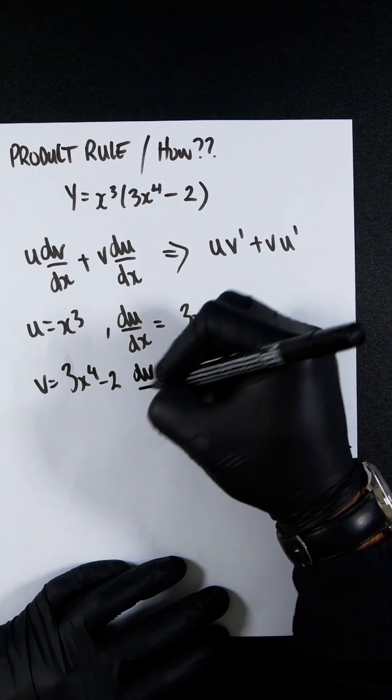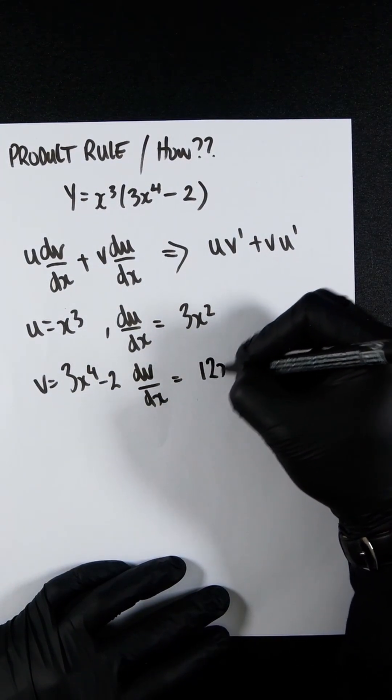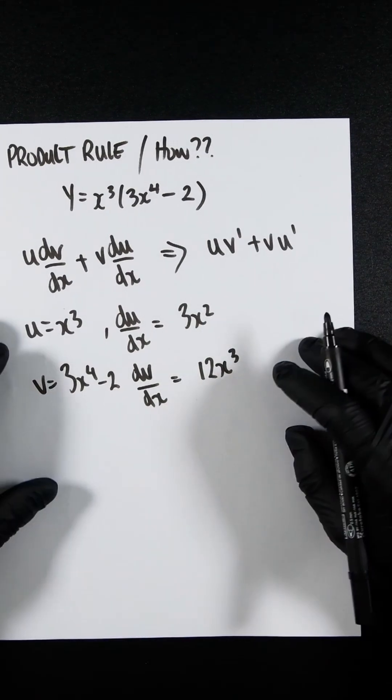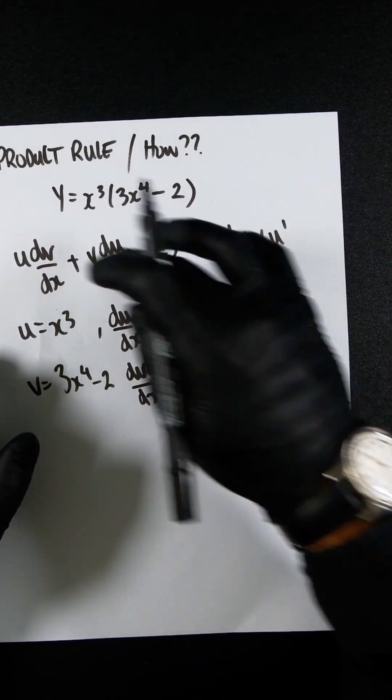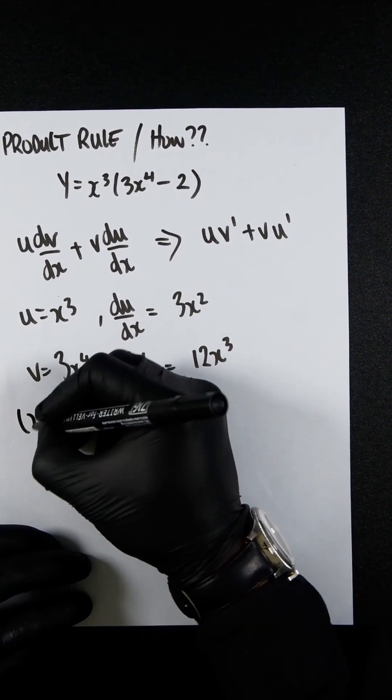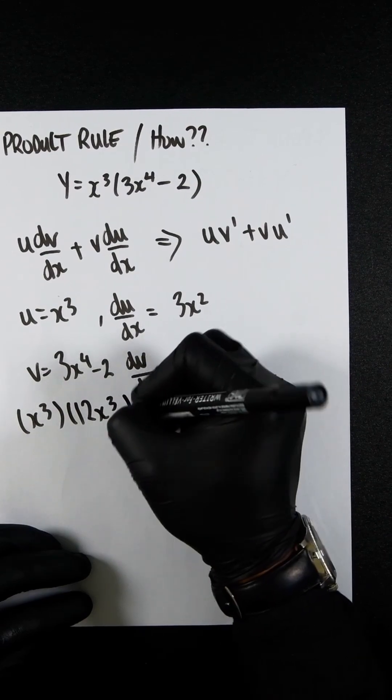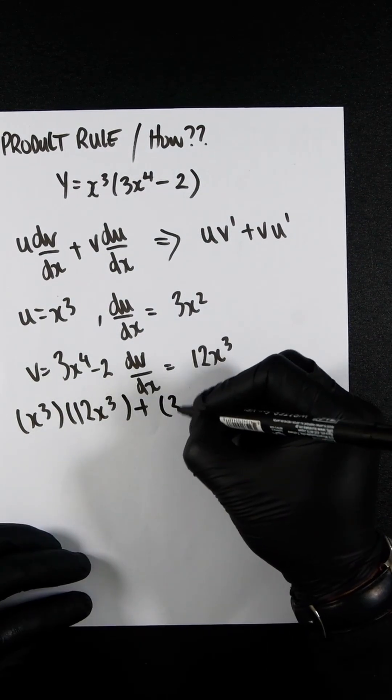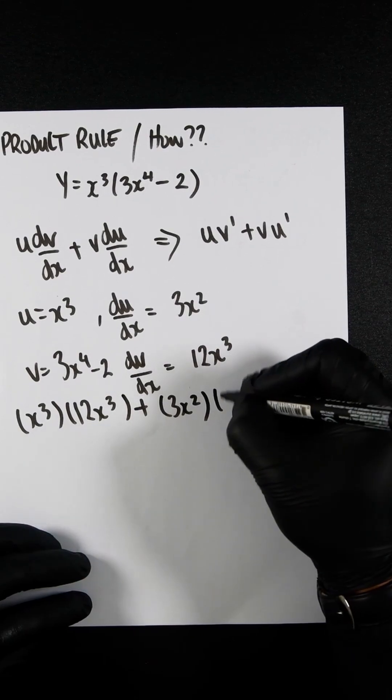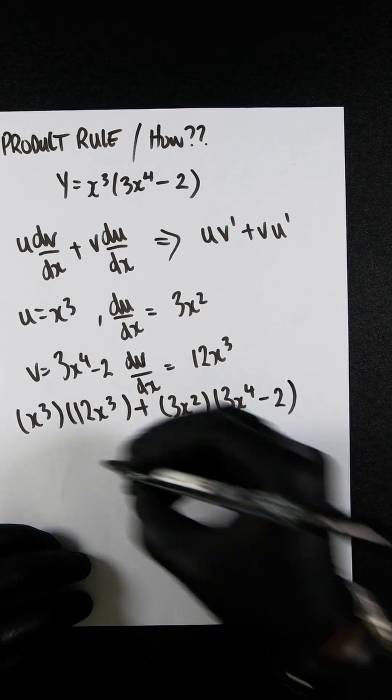So dv dx is 12x cubed. We now simply plug each of these values into this formula so that we can get our answer. So it's going to be x cubed, 12x cubed plus 3x squared, 3x to the power of 4 minus 2.